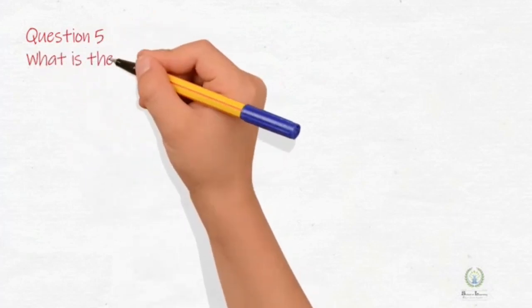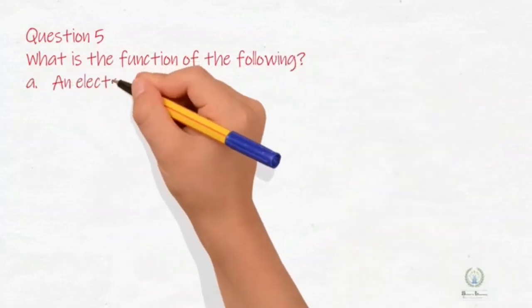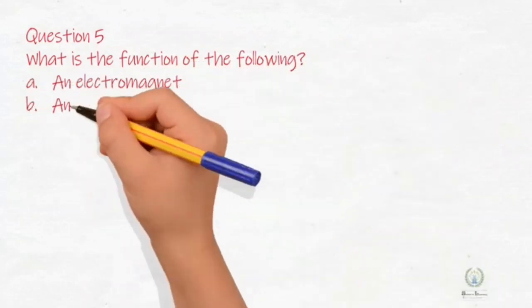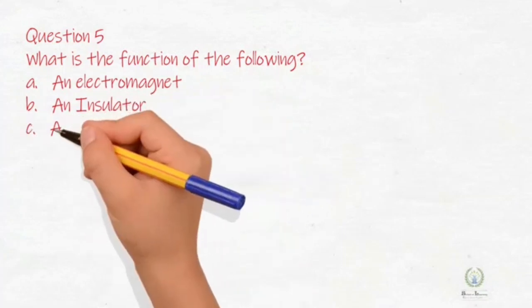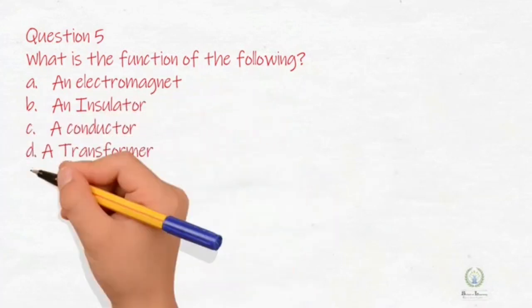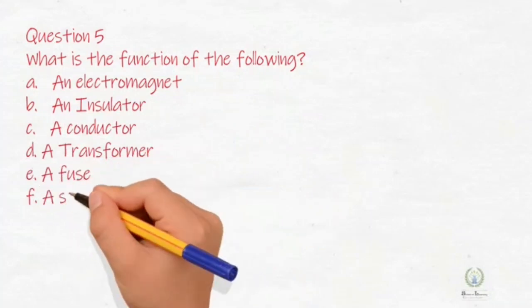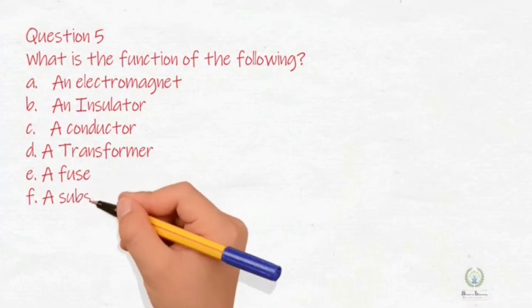Question number five: what is the function of the following? A: an electromagnet. B: an insulator. C: a conductor. D: a transformer. E: a fuse. F: a substation. Now we will write the function of all of these one by one. First of all, A: an electromagnet.